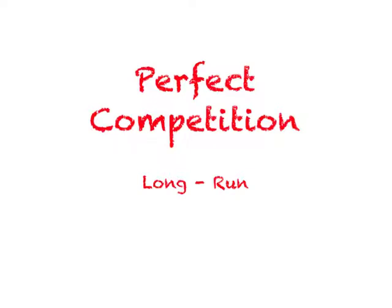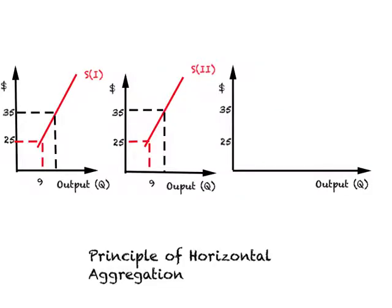Let us look at perfect competition in the long run, but before we do that let me answer two questions I could not cover when we discussed the short run. We know how a supply curve is derived for a firm under perfect competition — it is given by the rising stretch of the marginal cost curve above the minimum of AVC. Now suppose S1 represents the supply curve for the first firm and S2 represents the supply curve for the second firm.